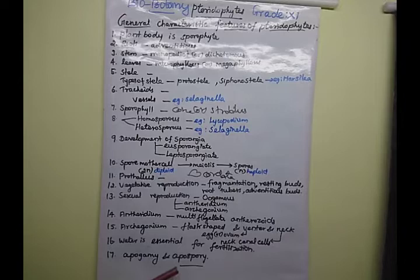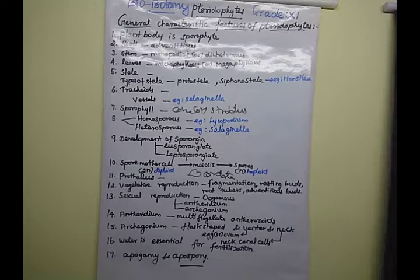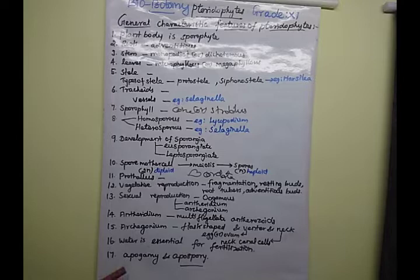Pteridophytes also show apospory. Apospory means the development of gametophyte from any vegetative cells of the sporophyte other than haploid spores - that is, without formation of spores. These are two special characters shown in Pteridophyte members: apogamy and apospory.